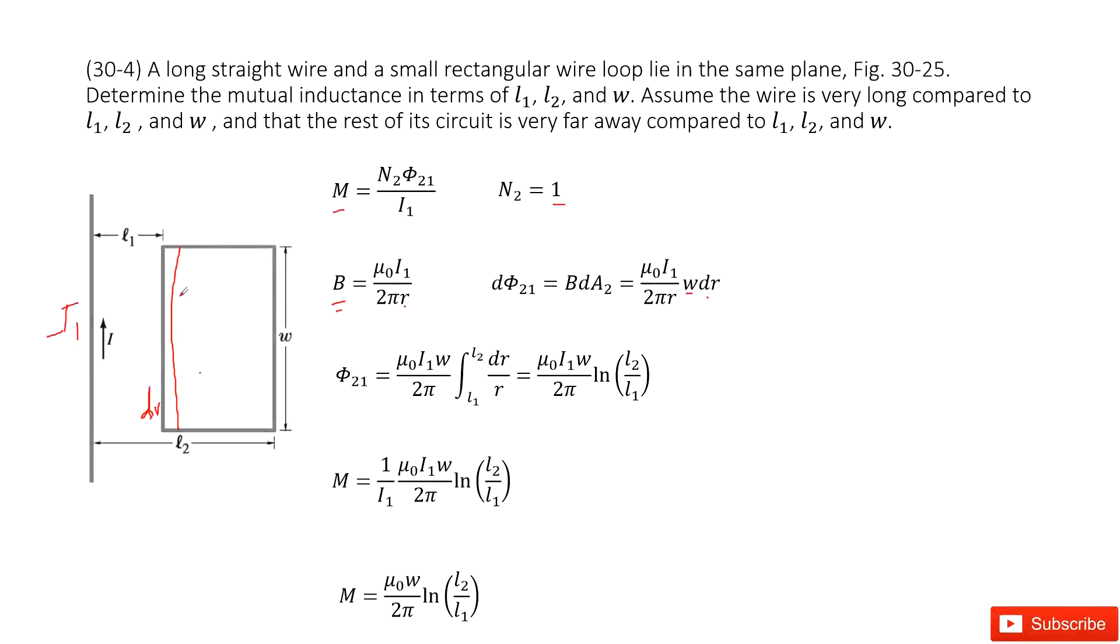So the magnetic flux for this small fraction is B times the cross-sectional area, so this is W times dr. Then we can do the integral for this case from L1 to L2. L1 to L2, we get it there.